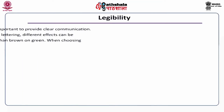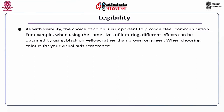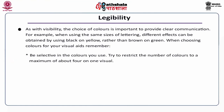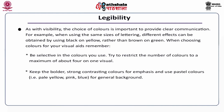Legibility: as with visibility, the choice of colors is important to provide clear communication. For example, when using the same sizes of lettering, different effects can be obtained by using black on yellow rather than brown on green. When choosing colors for your visual aids, remember: be selective in the colors you use. Try to restrict the number of colors to a maximum of about 4 on one visual. Keep the bolder, strong contrasting colors for emphasis and use pastel colors like pale yellow, pink, or blue for general background.